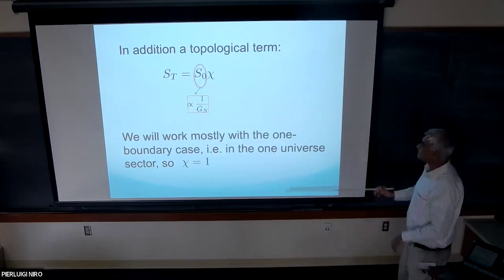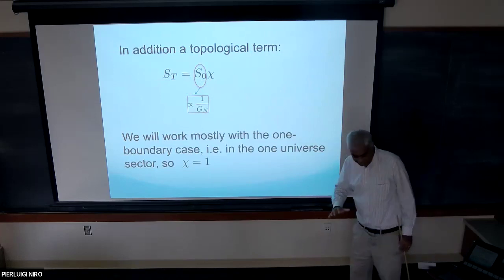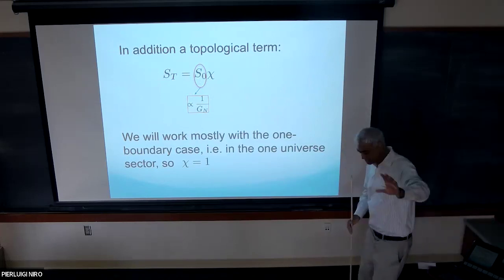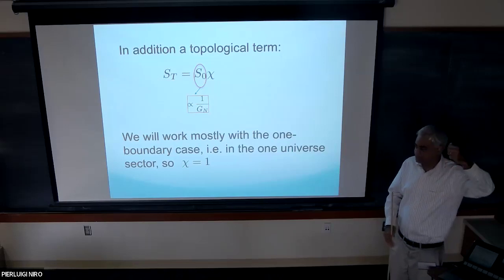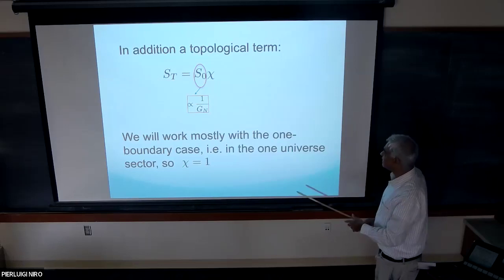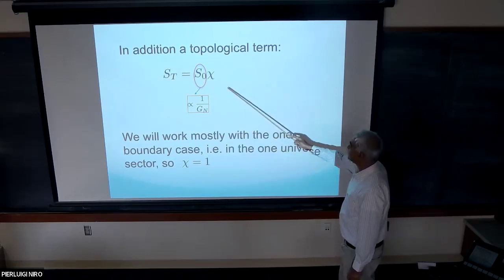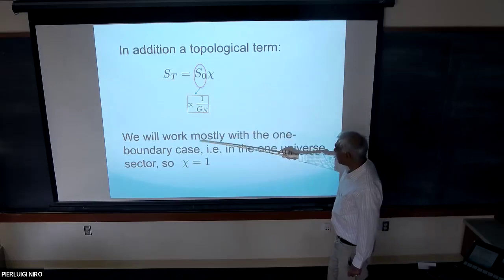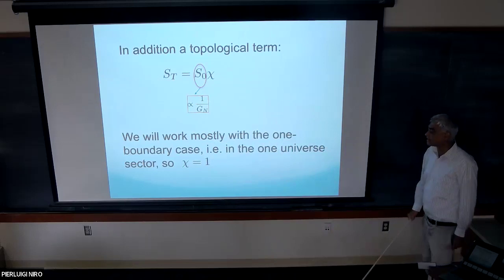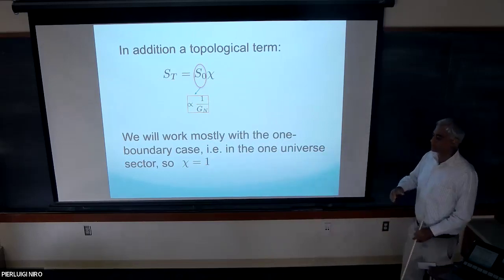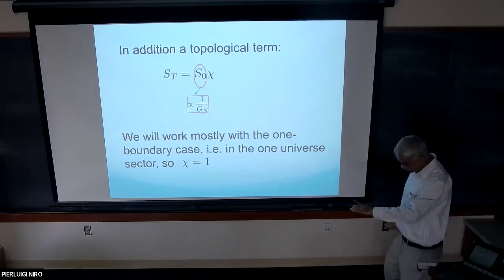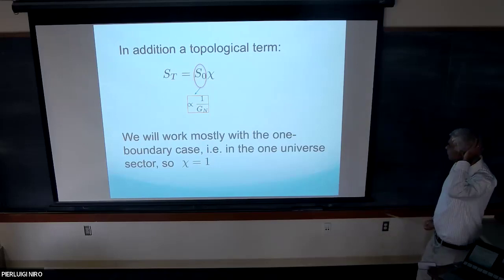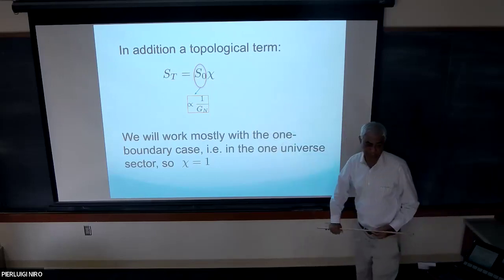There is an additional parameter in the theory — familiar from string worldsheet perturbation theory — which weights different topologies by different amounts. What we mostly do in this talk, except at the very end if time permits, is work with a fixed topology: a single boundary in space, a single universe rather than multiple universes, which gets very confusing in the canonical framework. That means we are suppressing topology change, and we can come back and ask what happens if we include it.